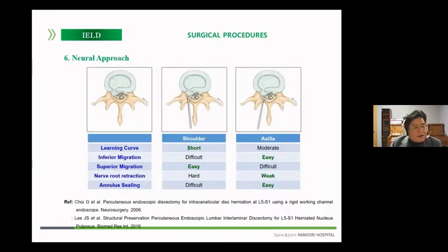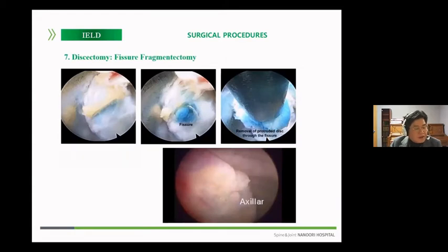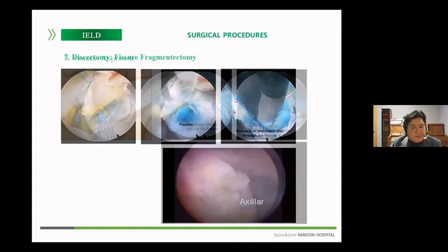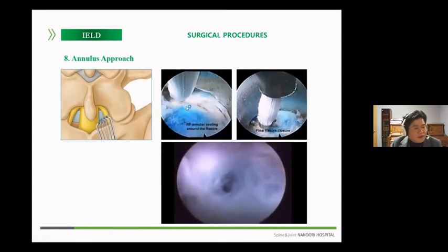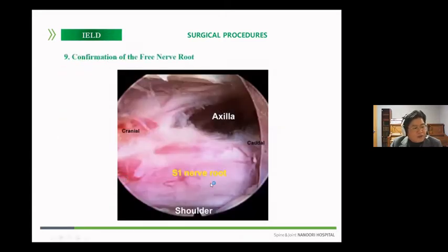Ligamentum flavum splitting can target the axilla and the shoulder of the nerve root. Compared to the shoulder, the axilla has many advantages in the process, so it is recommended to split at the axilla as the target if possible. It is recommended to perform annular fissure coagulation in order to sufficiently preserve the annulus in the process of removing the protruded disc, as seen here. For an already-made fissure, annular ceiling can be performed by shrinkage around the fissure through radiofrequency ablation. Finally, surgery is complete when we confirm the nerve root that was compressed is free.